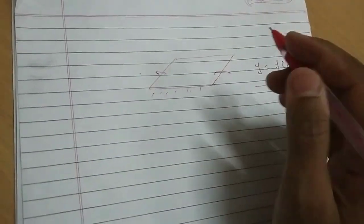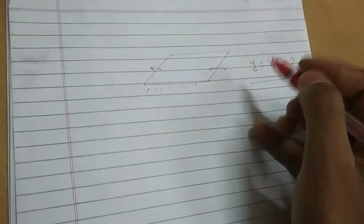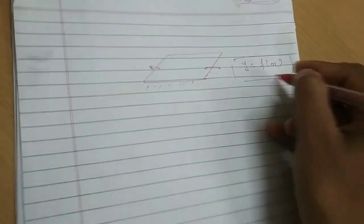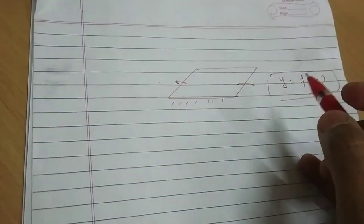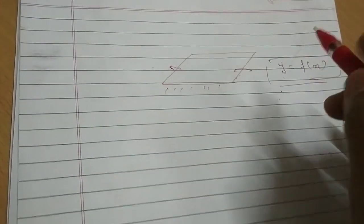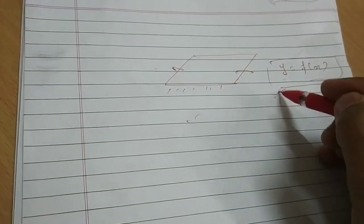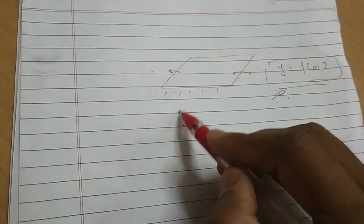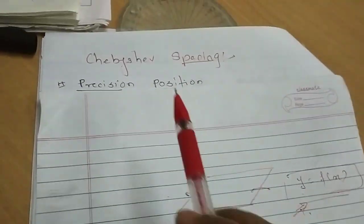Then synthesize the mechanism of input and output link relationship fits the function of y equals f of x. Now generally it is not followed that mechanism always follows this mathematical equation. But some points follow the mathematical equation exactly and those points are called as precision points.